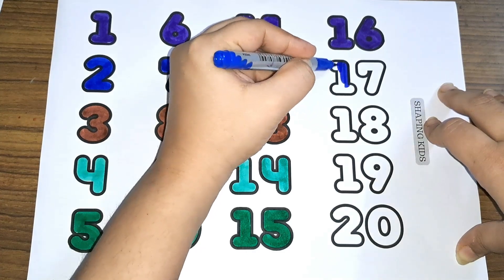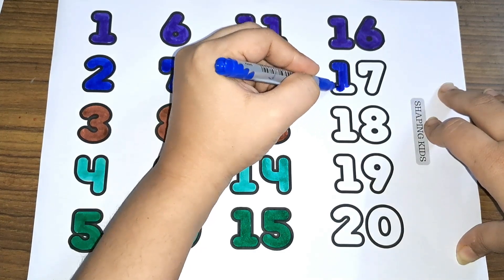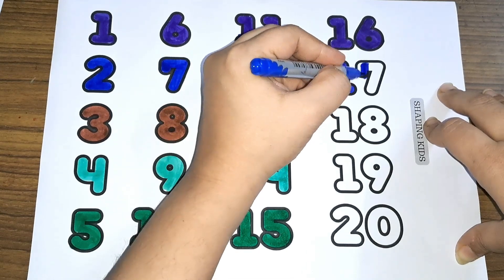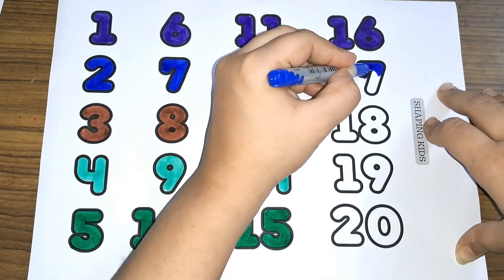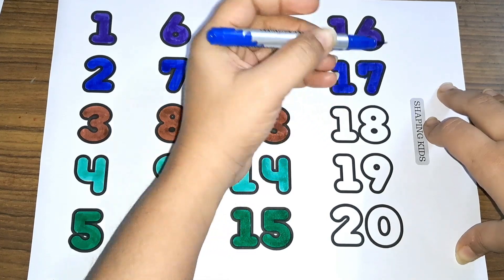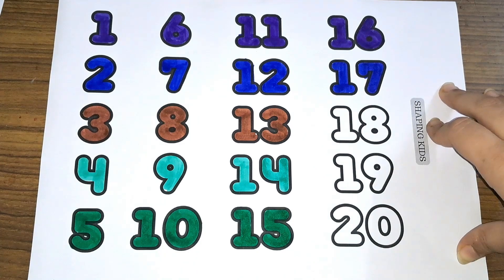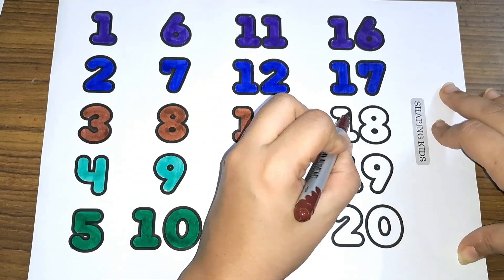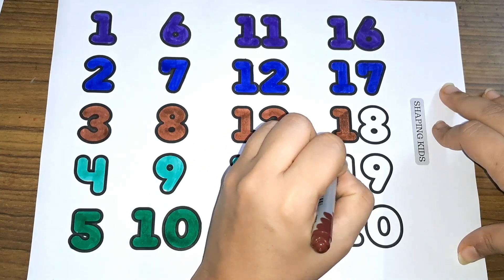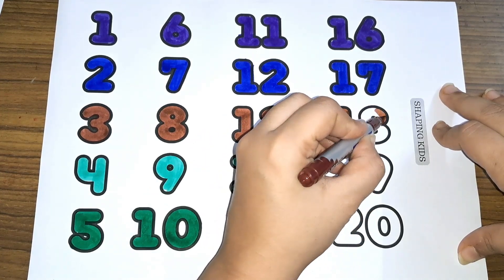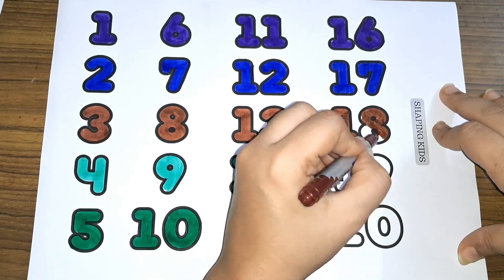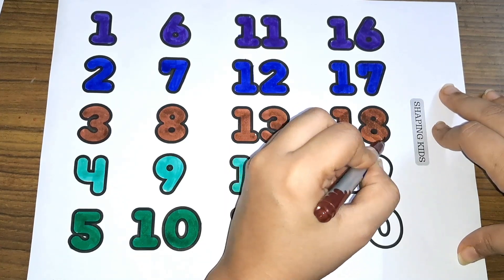One and seven, seventeen. One, seven, seventeen. Eighteen. One and eight makes eighteen. One, eight, eighteen. Number eighteen.